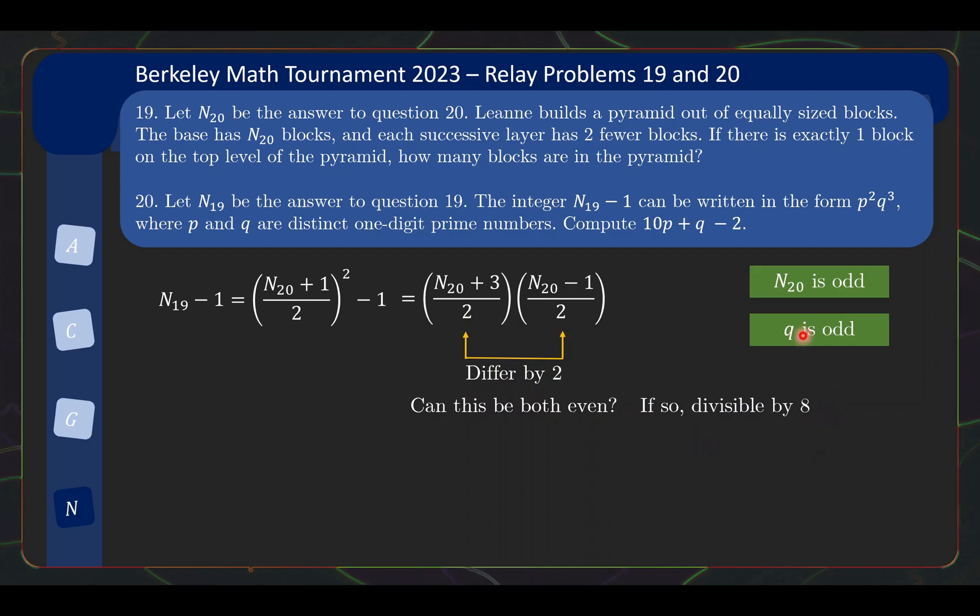But notice that q here is odd, so q is not equal to 2. Which means that in this prime factorization, our only hope is to have p equal to 2, but even so, this only gives a factor of 4, which is not enough to give us a factor of 8. So this means that the assumption of both terms being even cannot happen. So we actually conclude that both of these terms are odd.